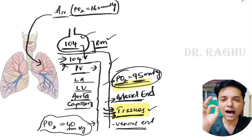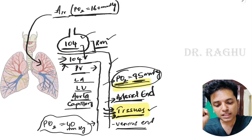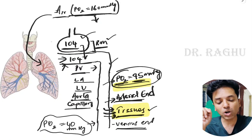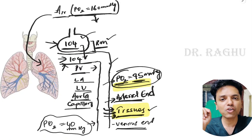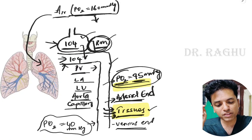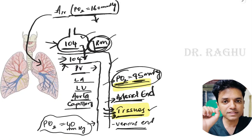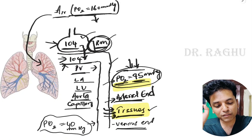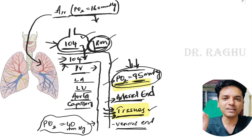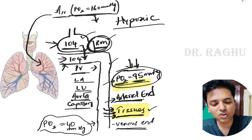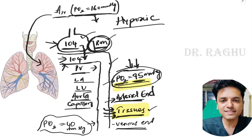Anything wrong occurring in this entire pathway — from the atmosphere to the tissues — will cause lack of oxygen at the tissue level. For example, reduced atmospheric pO2 at high altitude; abnormality of lungs and thoracic cage reducing alveolar aeration; or something wrong with the respiratory membrane impairing diffusion. All these cause a fall in arterial pO2, which falls under the category of hypoxic hypoxia.